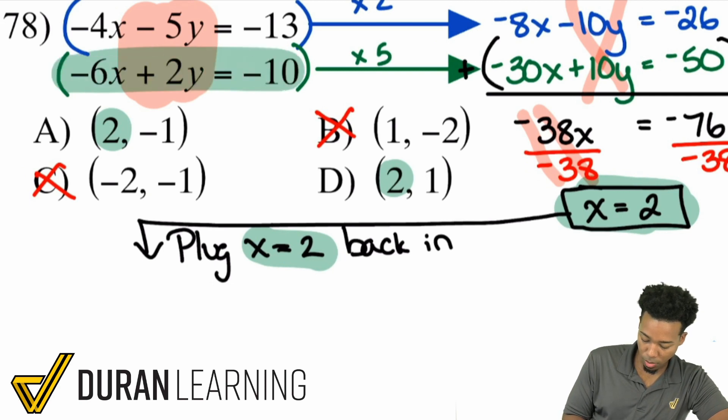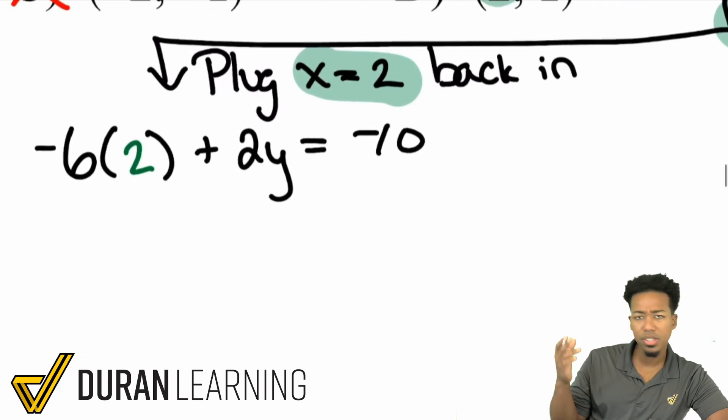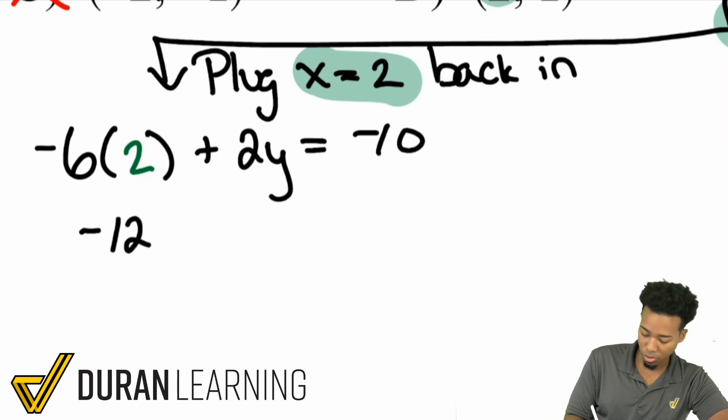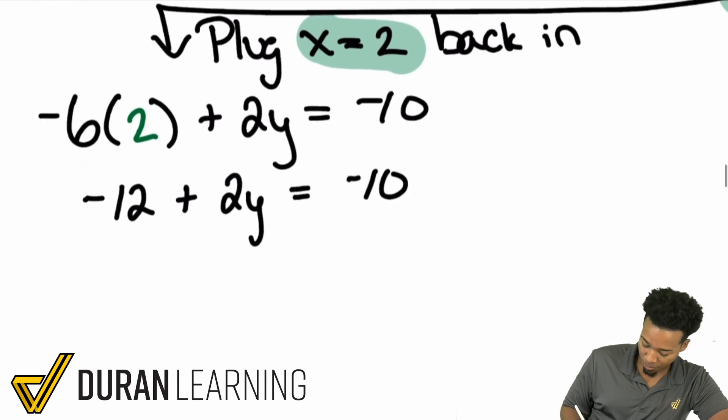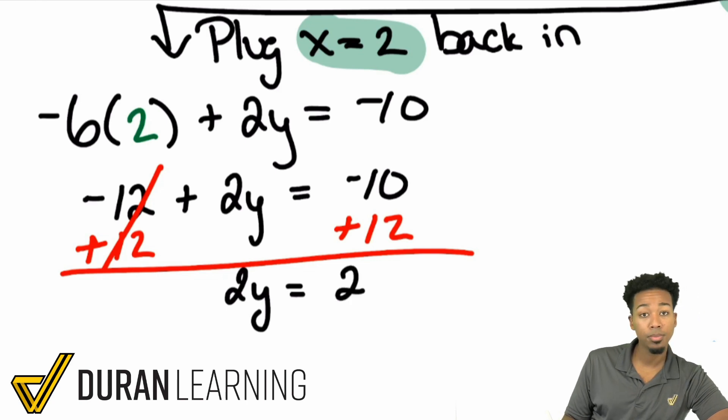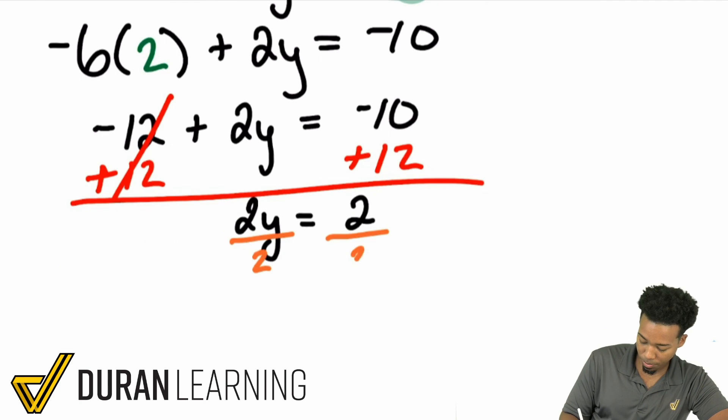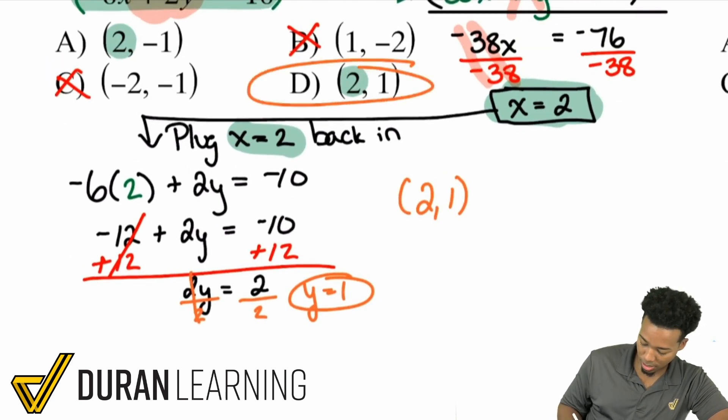Plug the x equals 2 back in. I'll go ahead and just take this first equation here. So, negative 6 multiplied by that positive 2, plus 2y equals negative 10. So, let's go ahead and solve this. Negative 12 is negative 6 times 2. Plus 2y equals negative 10. From here, let's just go ahead and add the 12 to both sides. Because it's going to cancel out. Giving me 2y equals positive 2. And from there, we'll divide both sides by 2. And that's going to be y equals 1. So, we have a positive 1 for the y. And so, the answer is going to be 2 comma 1. Which is why D is the correct answer.